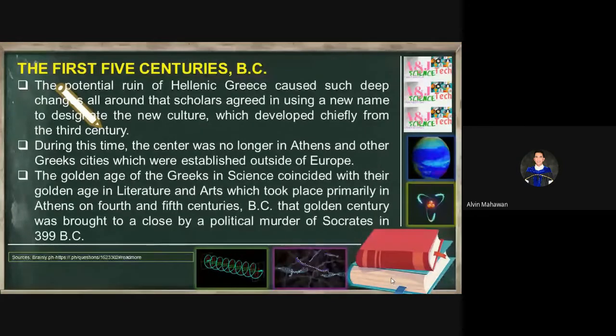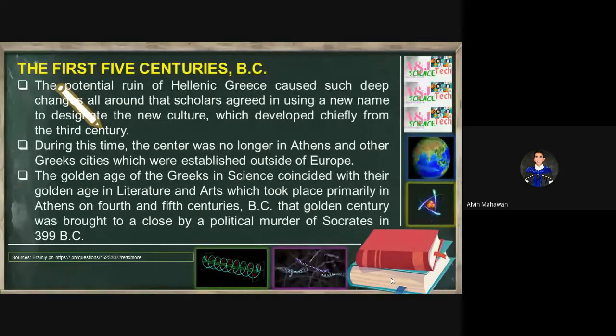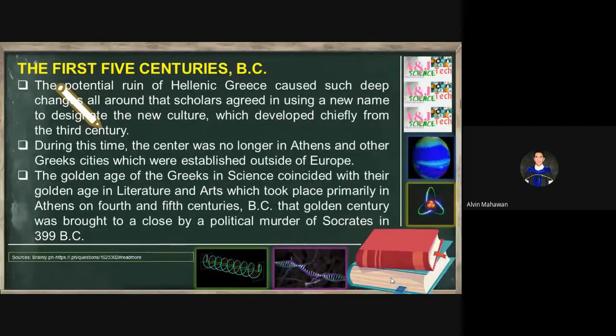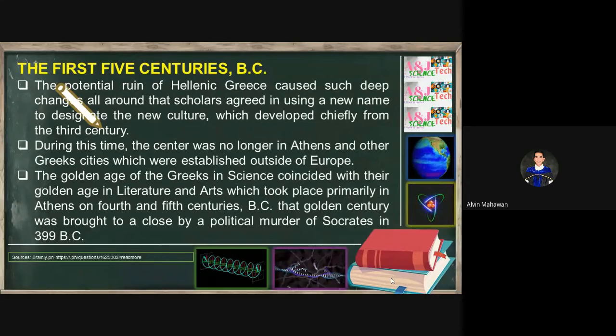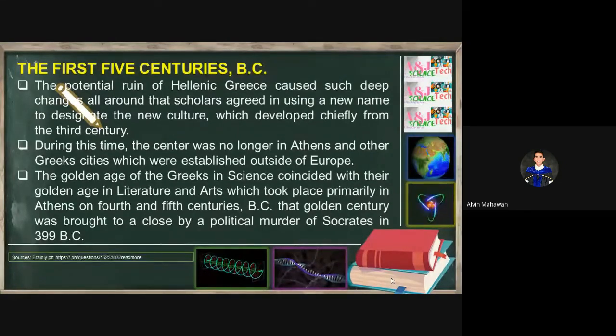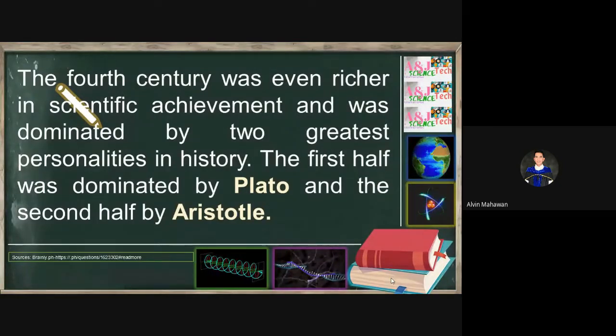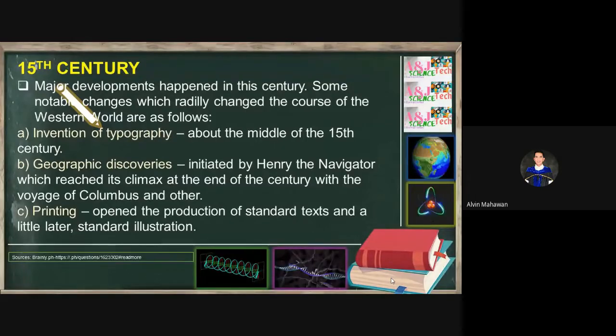That golden century was brought to close by political murder of Socrates in 399 B.C. In order to accommodate or give privilege, there was killing wherein a brother to a brother because he wanted to lead or rule a kingdom or community. This happened during the time of Socrates. The fourth century was even richer in scientific achievement and was dominated by two greatest personalities in history. The first half was dominated by Plato and the second half by Aristotle.